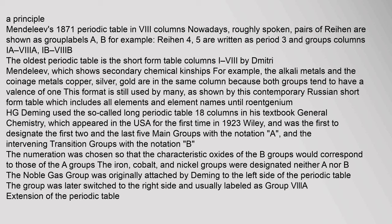H.G. Deming used the so-called long periodic table (18 columns) in his textbook General Chemistry, which appeared in the USA for the first time in 1923 (Wiley), and was the first to designate the first two and the last five main groups with the notation A, and the intervening transition groups with the notation B. The numeration was chosen so that the characteristic oxides of the B groups would correspond to those of the A groups. The iron, cobalt, and nickel groups were designated neither A nor B. The noble gas group was originally attached by Deming to the left side of the periodic table, later switched to the right side and labeled as group VIIIA.